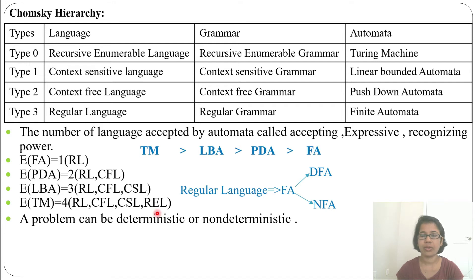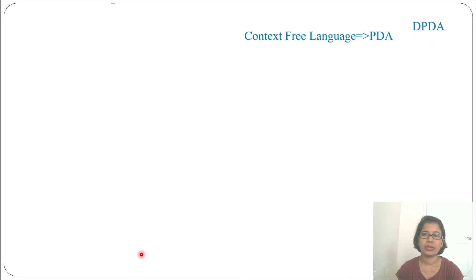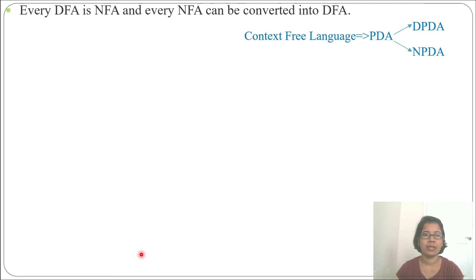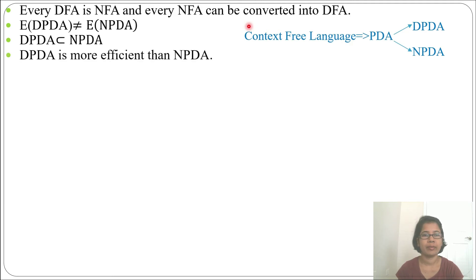Deterministic means you can determine what the next step will be. In non-deterministic, there is more than one option — you can go anywhere to reach the destination, but in deterministic there is a specific path. Comparing DFA and NFA: the expressive power of DFA equals the expressive power of NFA — both can accept the same number of languages. DFA is more efficient than NFA because it is a complete structure, but NFA design is easier than DFA. Every DFA is an NFA, and every NFA can be converted to a DFA.